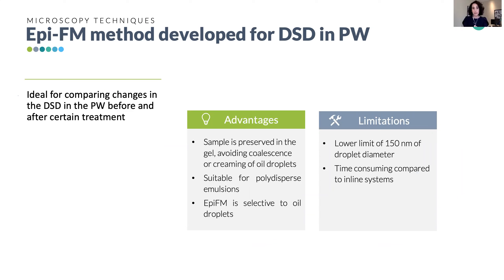We concluded from optical microscopy that we developed a method to quantify droplet size distribution applicable to comparing changes before and after treatments such as coagulation or filtration. Advantages include: the sample is preserved — preventing coalescence or creaming — it is suitable for polydispersed samples, it is selective to oil droplets, and it is especially suitable for produced water because it ignores other contaminants such as dust, gas, and bacteria. The limitation is the optical resolution limit of 150 nanometers, and it is time-consuming compared to inline systems, though that could be improved by AI-based image post-processing.